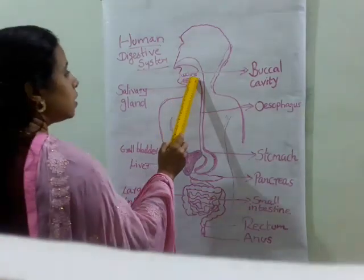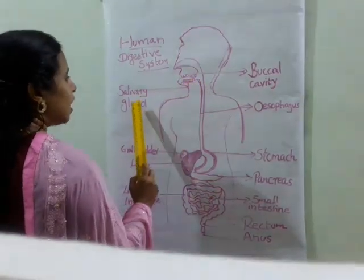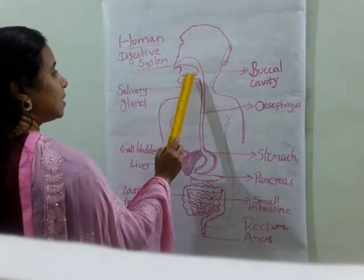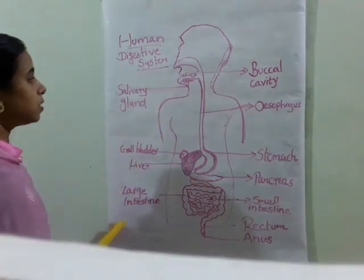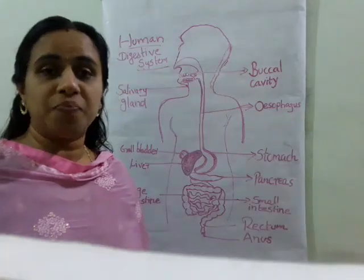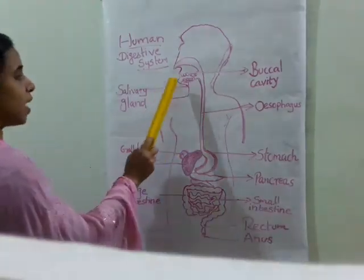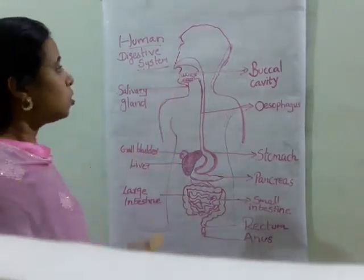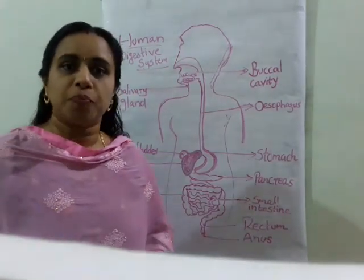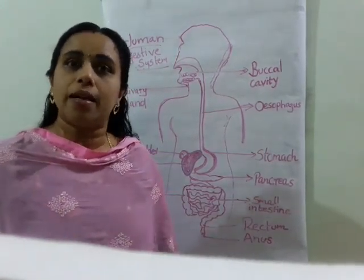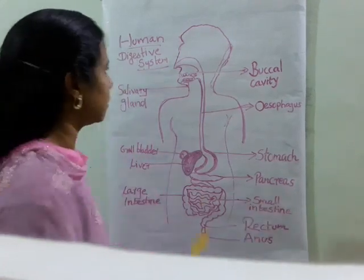So here in the mouth, there is a salivary gland present. This salivary gland secretes some enzyme — that is saliva. When it mixes with the food items, the food may be a little bit digested.